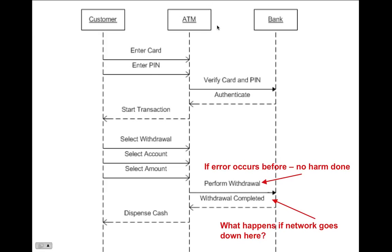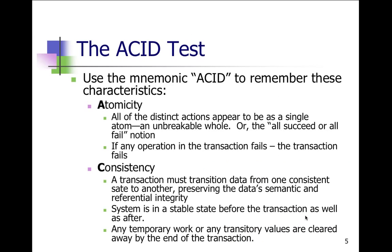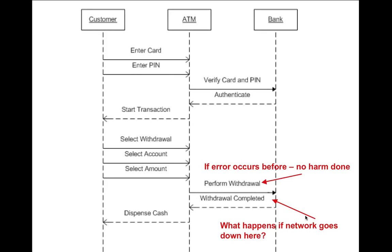Thinking about the order of processing transactions: a customer enters a PIN, enters a card for the ATM, the ATM goes to the bank, verifies, authenticates, comes back, starts a transaction, selects a withdrawal, selects the account, selects the amount. If errors occur before the withdrawal is performed, no problem — it's not that critical. But what if the network goes down after withdrawal is completed but before cash is dispensed? You want to make sure it's done fairly so you don't have to go back and clean up the mess.